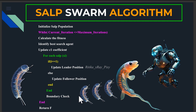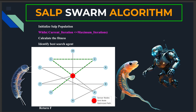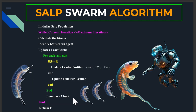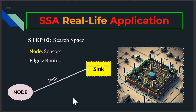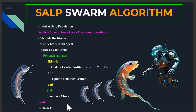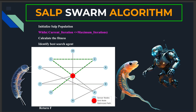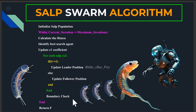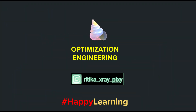This optimization process continues until the stopping condition is satisfied — when the maximum number of iterations is reached, the algorithm returns the best routing path found. The leader salp represents the best routing path that reduces communication delay and minimizes energy usage of the sensor nodes. SSA explores different routes in the sensor network, with each salp representing a possible routing path, and the best path having low delay and using least energy. That's all about this video — if you have any questions you can comment below.